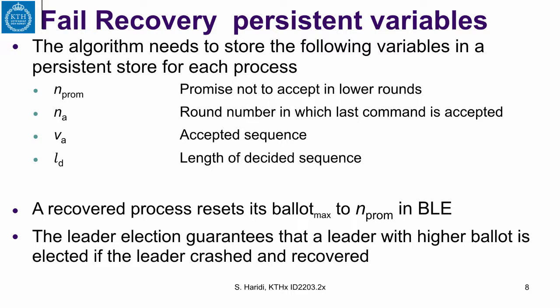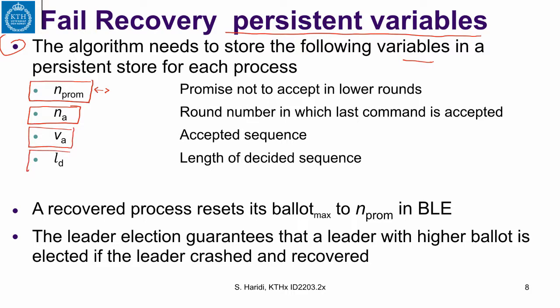In the fair recovery model, we have to store some variables in a persistent store — these are the persistent variables. The algorithm needs to store the following for each process: the promise not to accept in lower rounds (normally the ballot number associated with the leader when this process crashed), the round number in which the last command was accepted, the accepted sequence, and the index or length of the decided sequence. The process also stores the process configuration, which is the identifiers of all processes in the system.